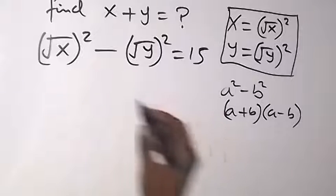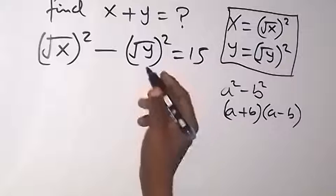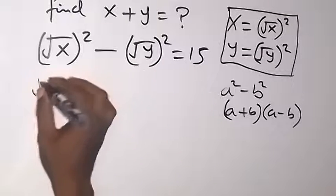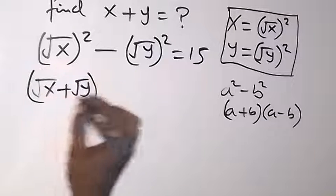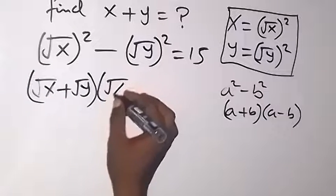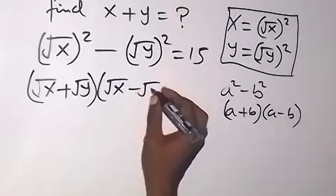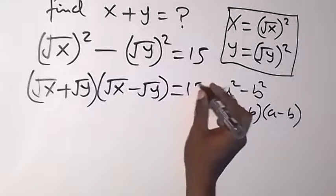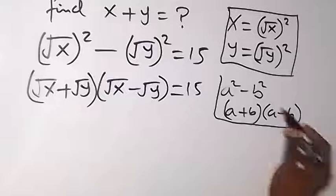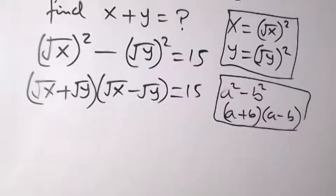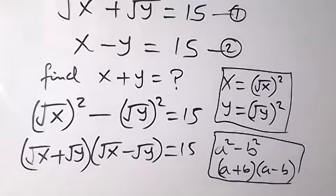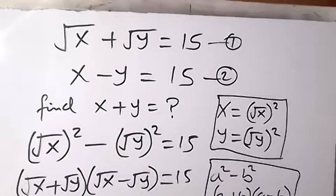That means a is like root x here, and b is root y. So we now have root x plus root y, then multiply by root x minus root y, which is equal to 15. And from equation 1, we have root x plus root y is 15.